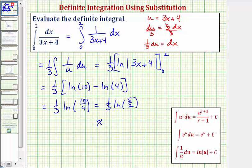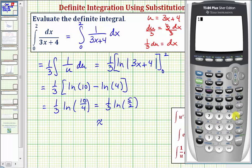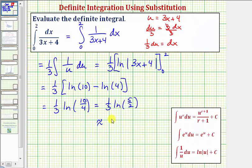Let's also look at our decimal approximation. We have one third natural log five halves, which would be approximately 0.3054. So we have both the exact value and the decimal approximation.